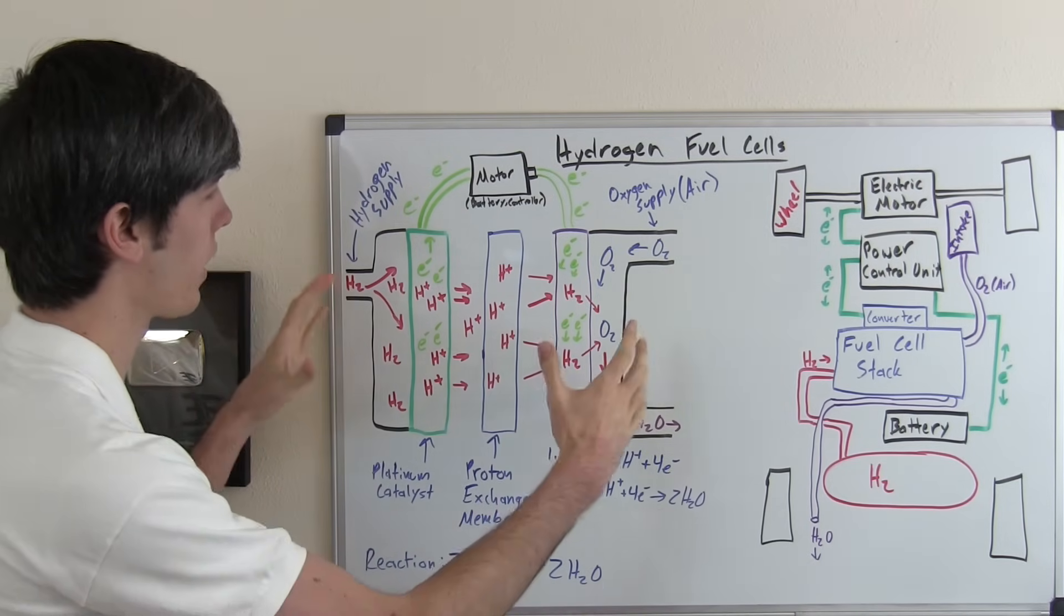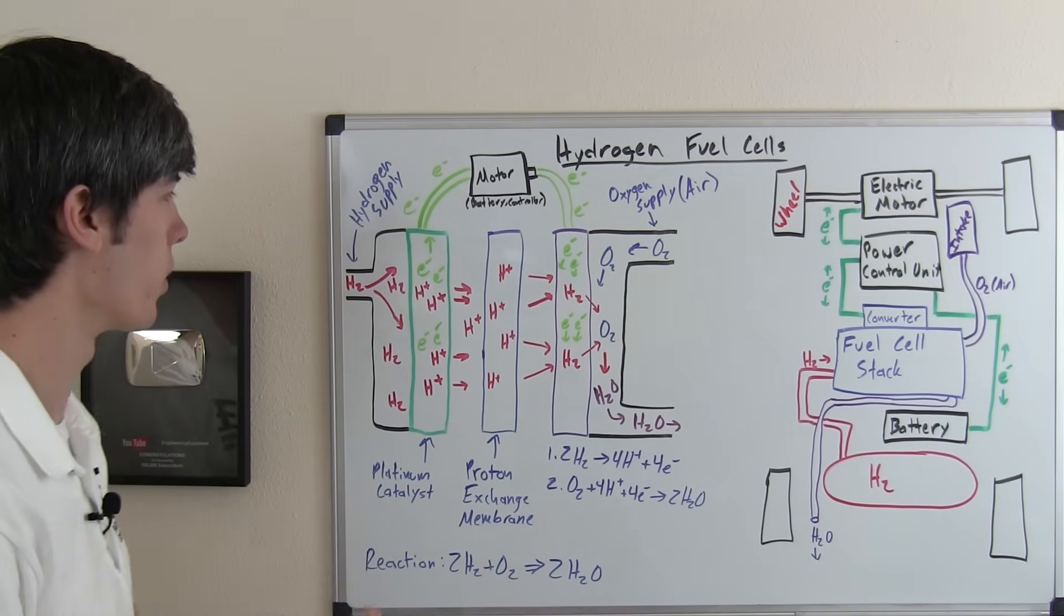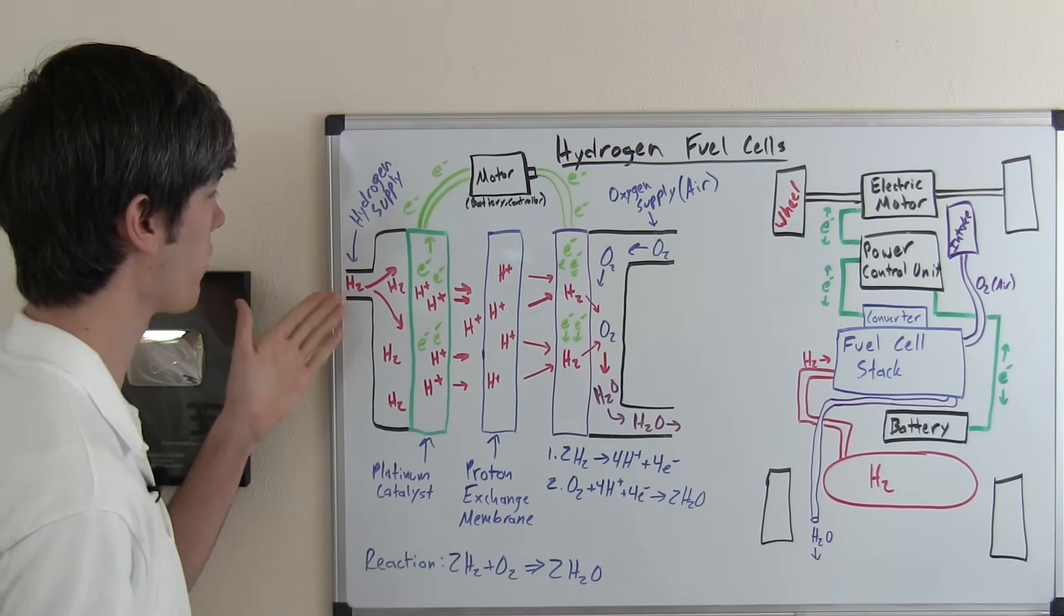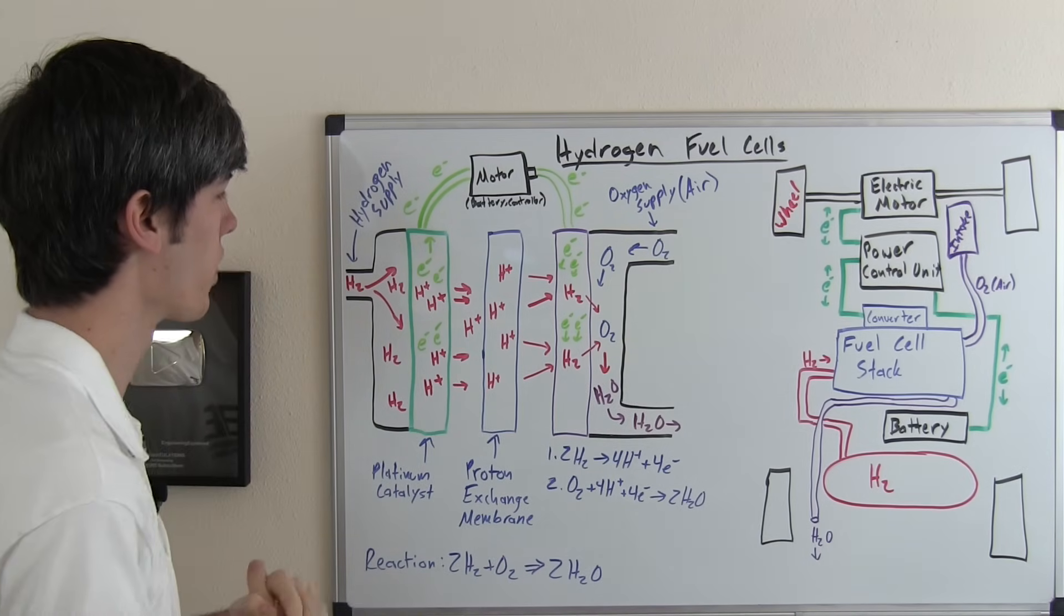So here we have a hydrogen fuel cell and it may look a bit complicated at first but they're actually rather simple. So what we've got going on, on the left side we have a hydrogen supply and on the right side we have an oxygen supply.